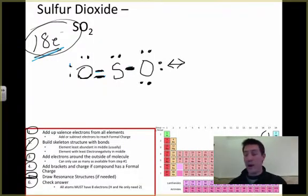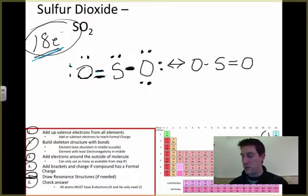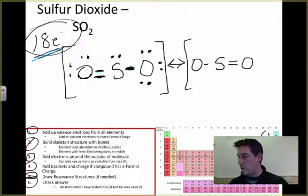So we use arrows to show that both of these can occur. We've got sulfur in the middle, and this time we put our double bond going the other direction and our single bond where our double bond was before. I'm going to put brackets around these to show we're drawing two different structures. There's no formal charge, so brackets aren't entirely necessary.